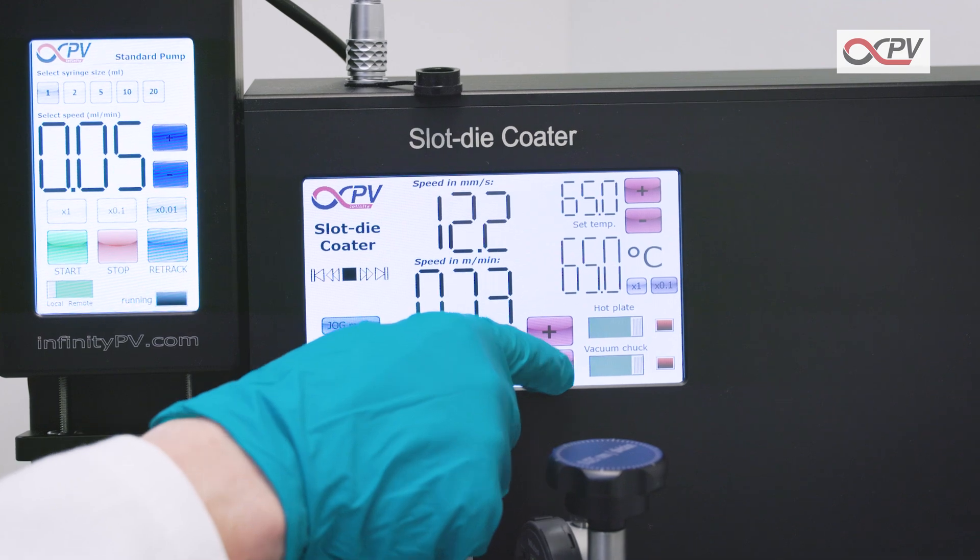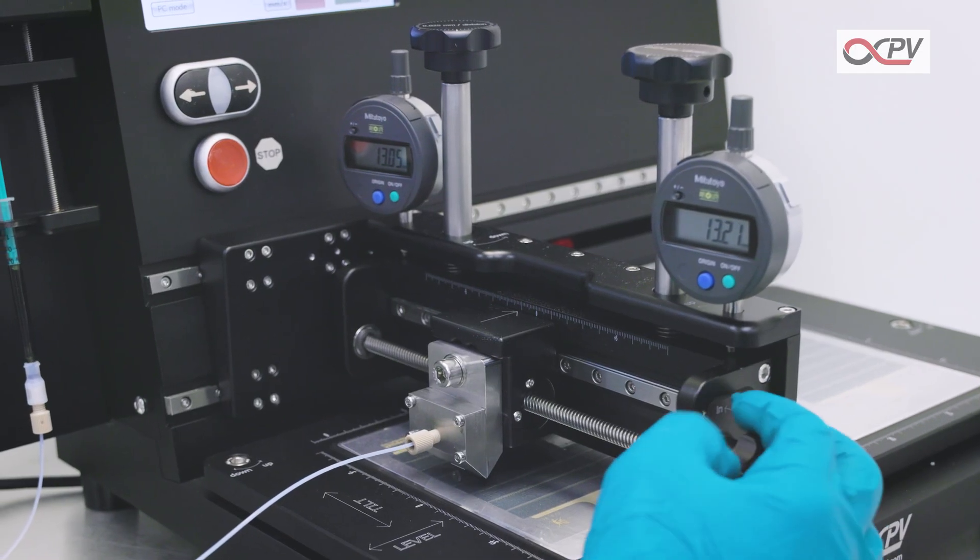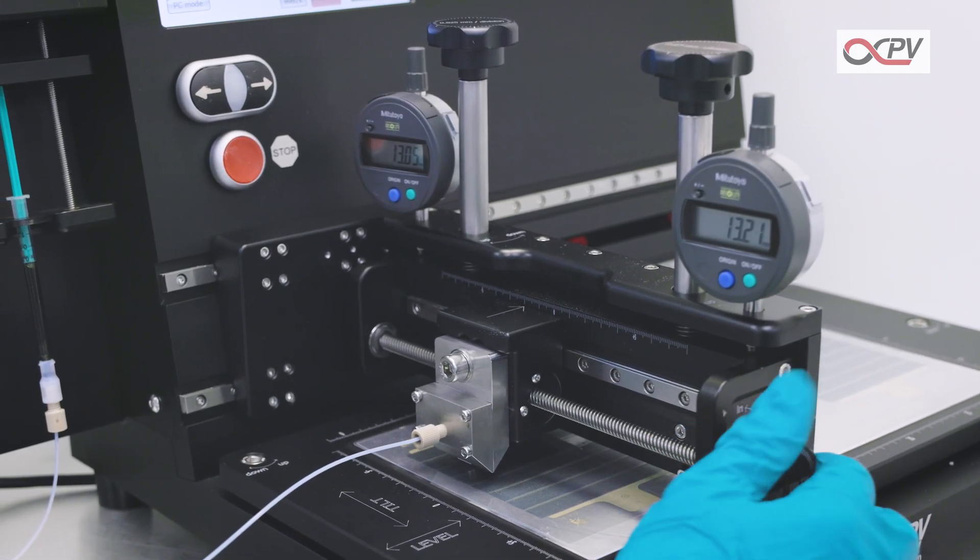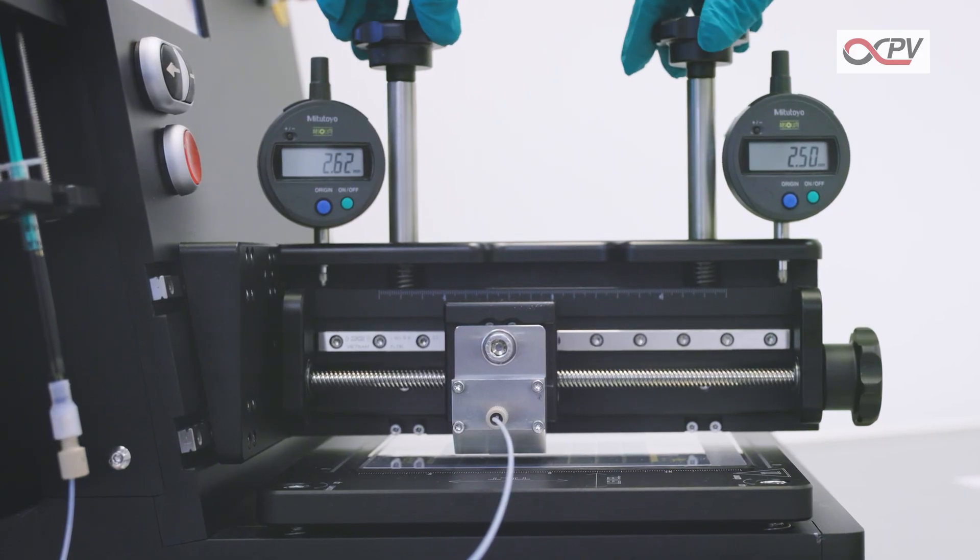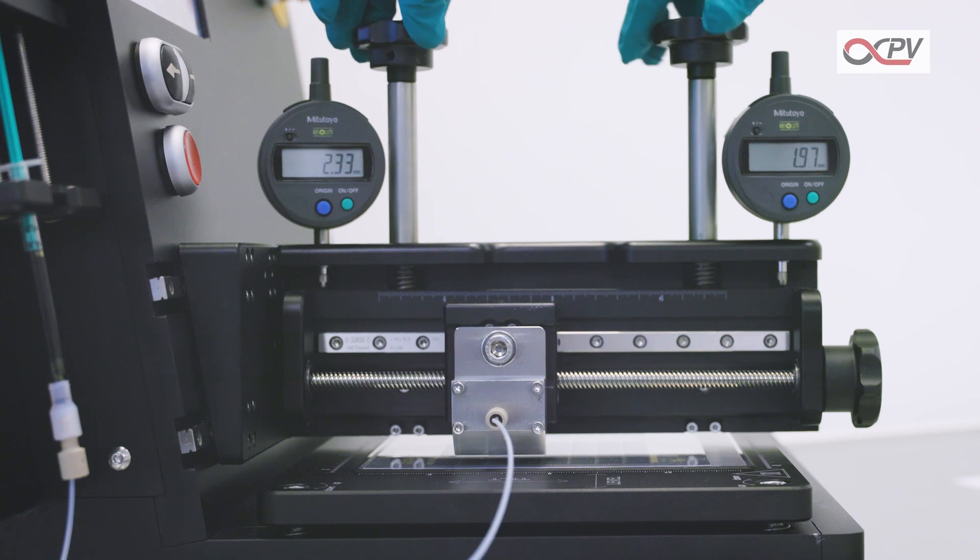Set the desired coating speed. Adjust the cross-web position of the Slot Dye Head to align with the substrate pattern. Then set the gap between the Slot Dye Head and substrate to achieve the correct coating gap.